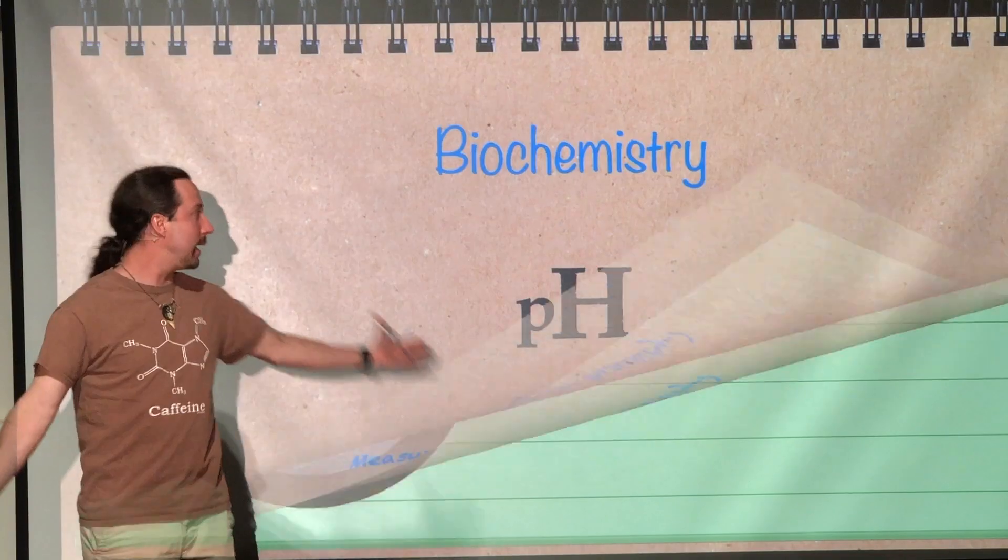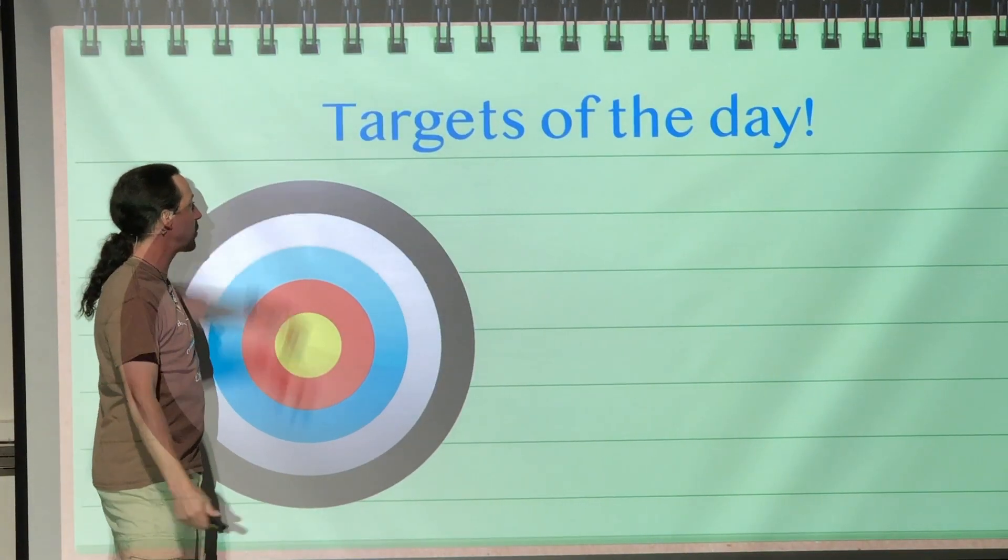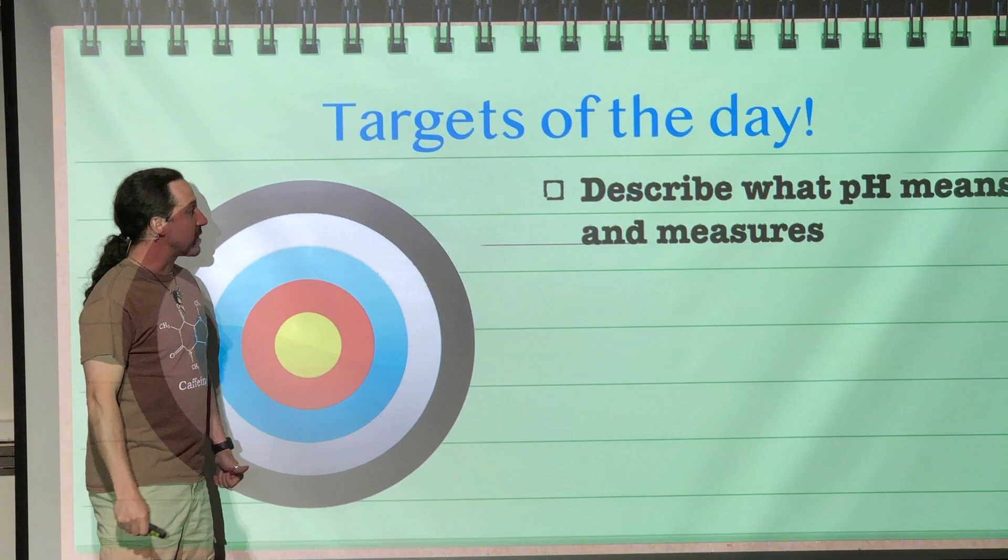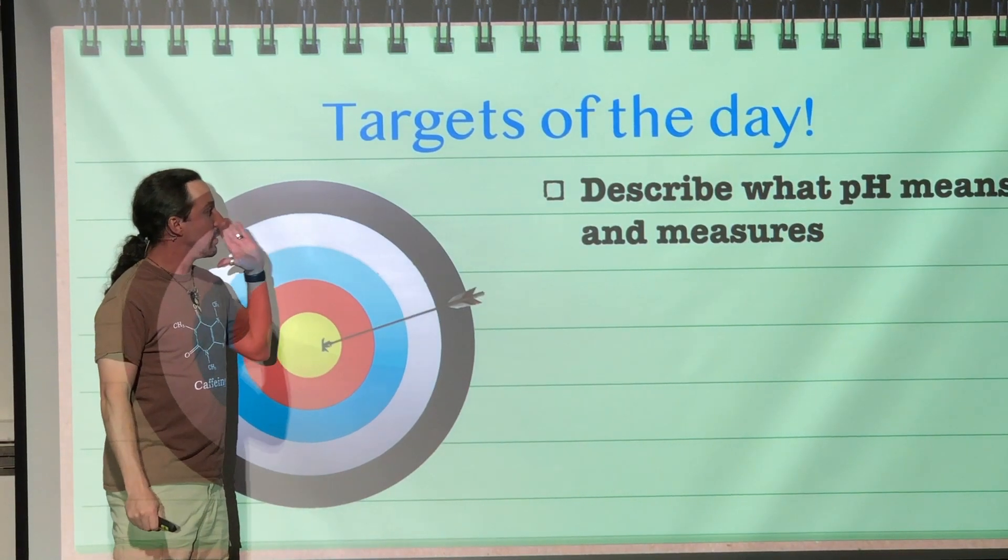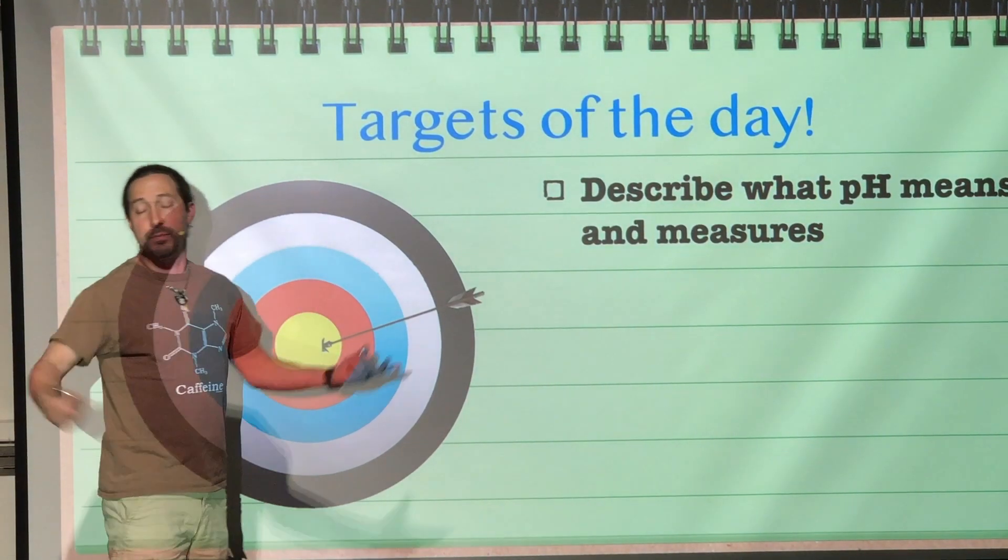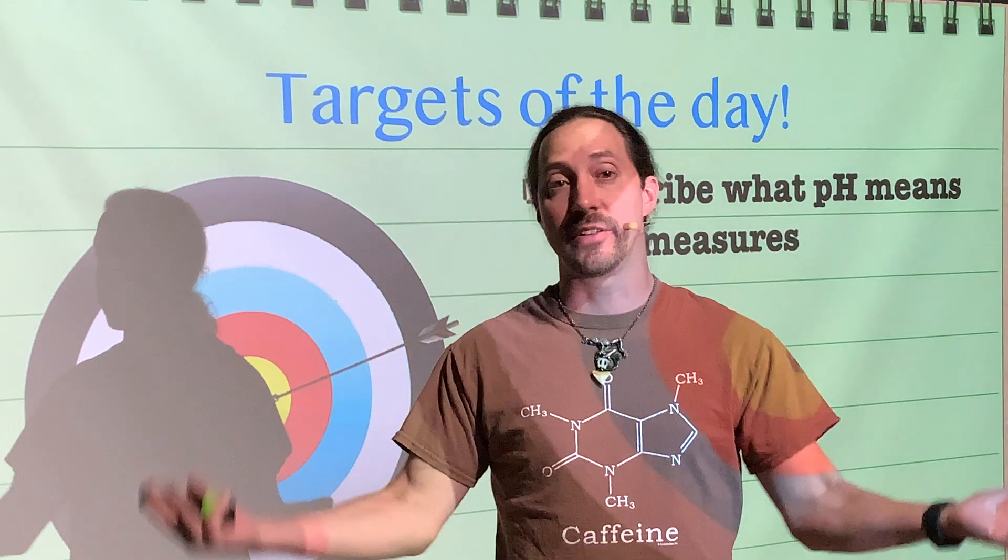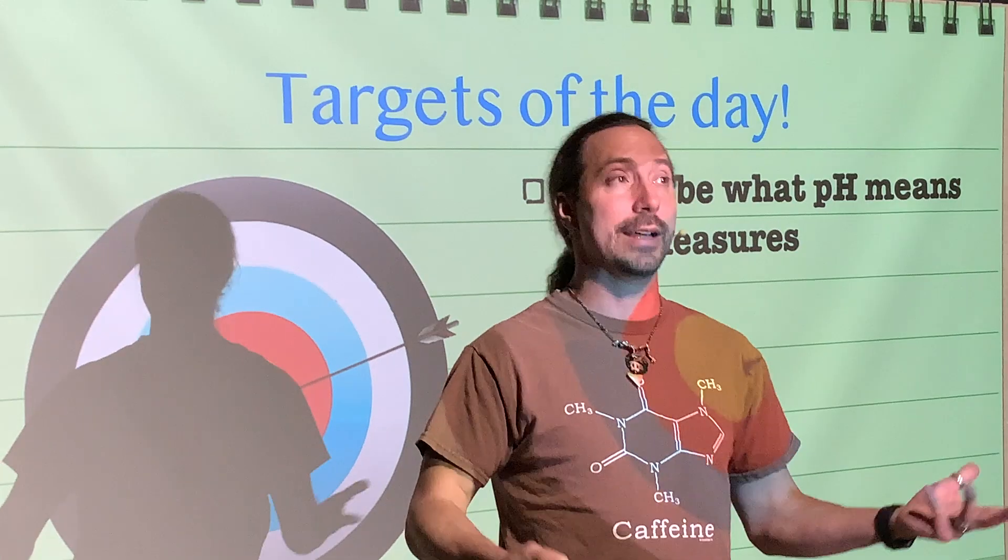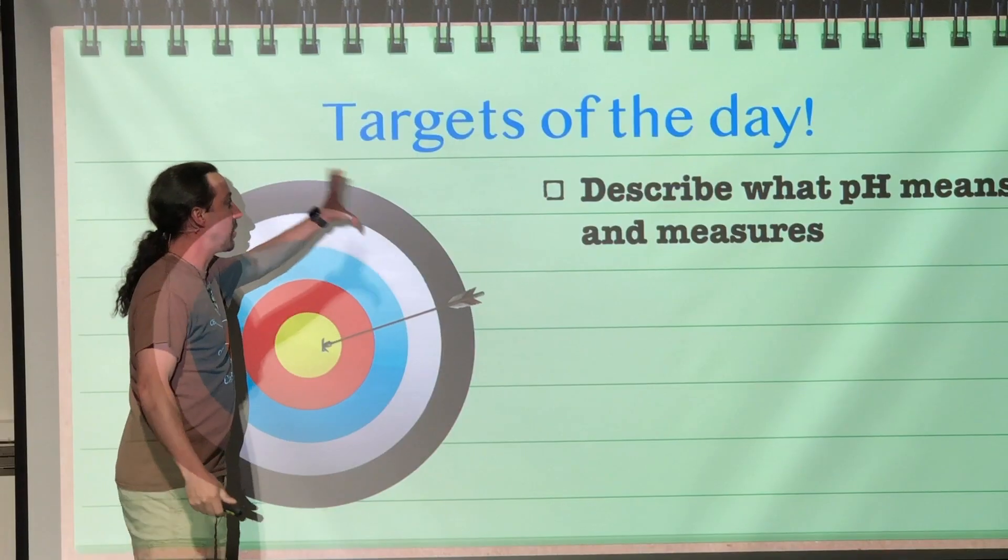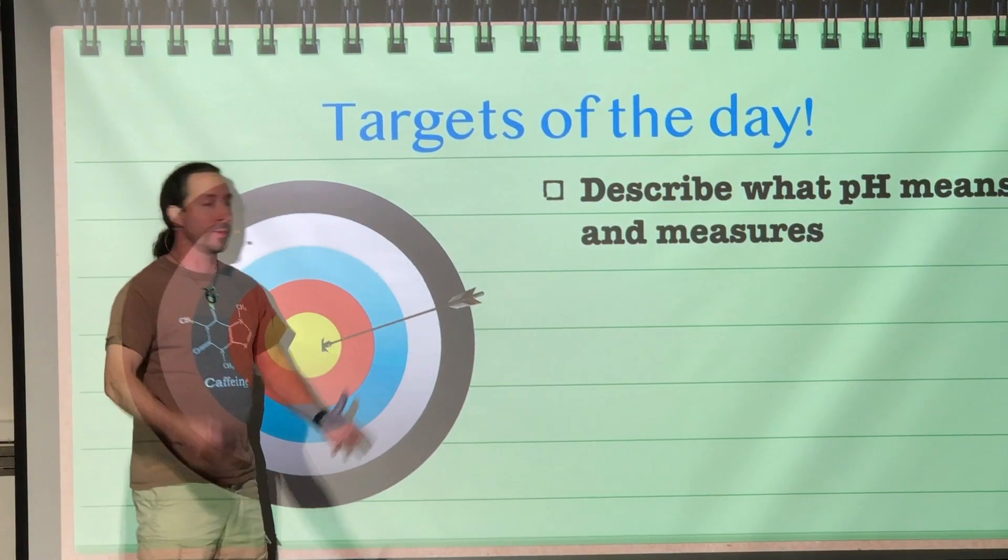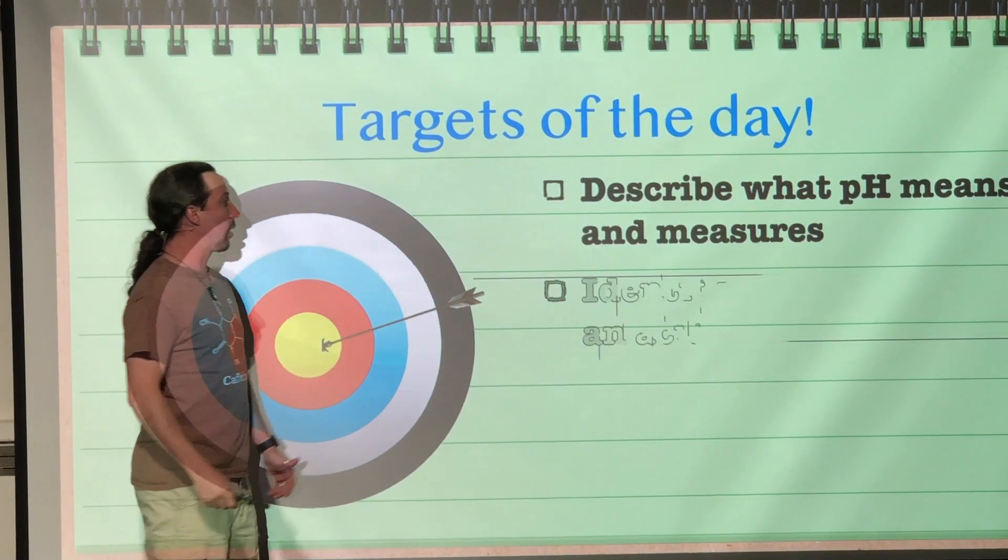So for pH, what is it? How's it work? We have a few different targets. First, describing what pH means and what it actually measures, because it's very hard to understand something if we don't understand what it means and what it is all about. So pH is going to measure something. It's a unit of measurement and clearly that's going to be something we're going to look at.